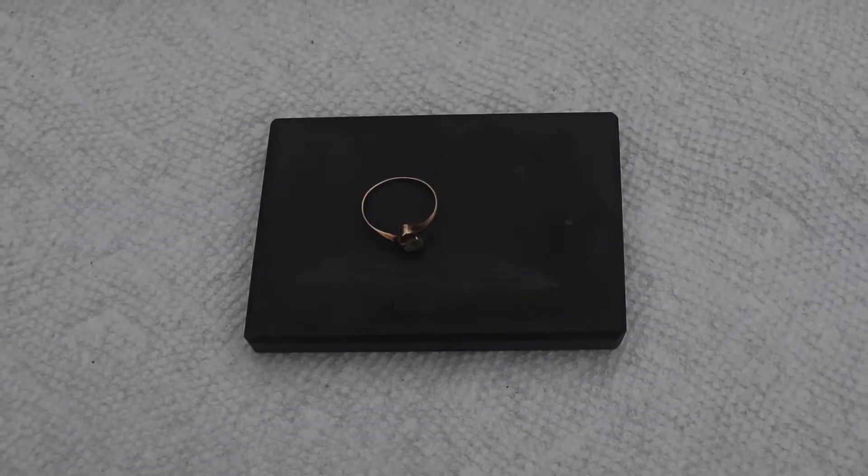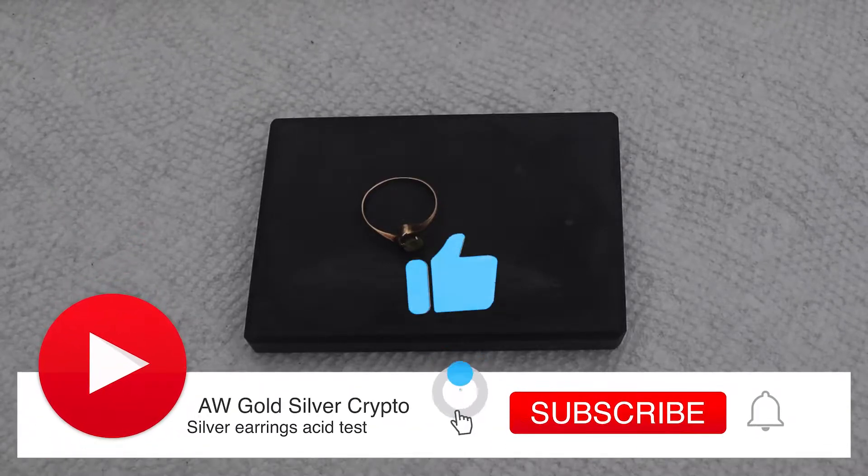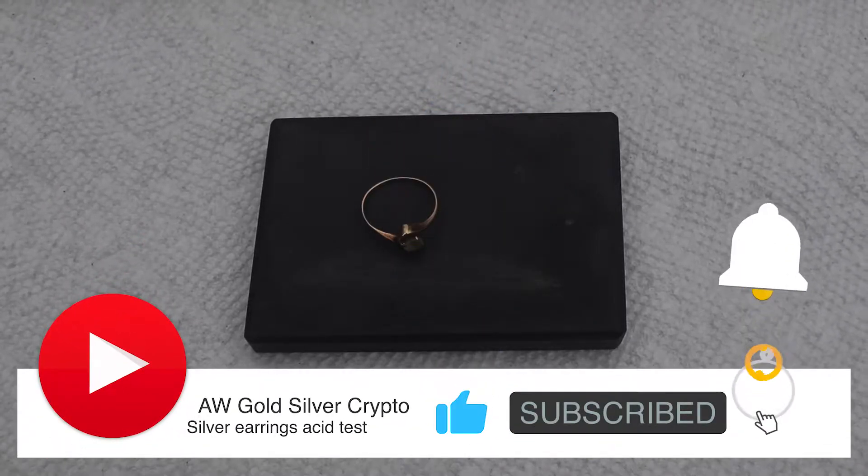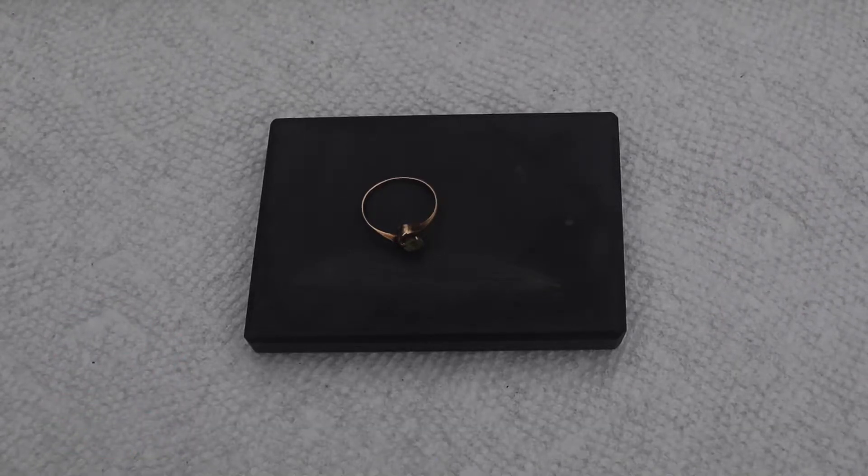Hello, today we're gonna be looking at this beautiful yellow gold ring. It has a little green stone there. We'll take a look at it - I don't think it's anything valuable, but we're here for the gold.